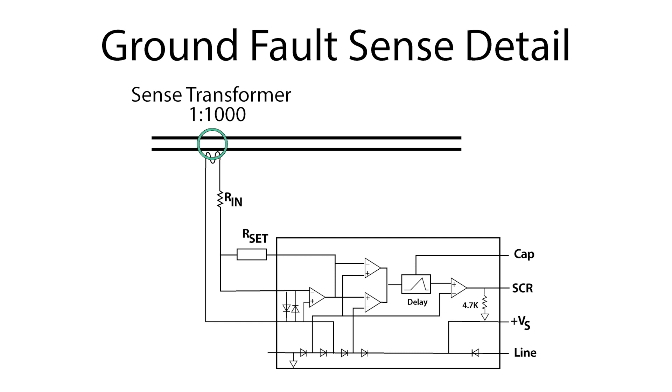The current generated in the toroid windings goes to the precision op-amp which converts it to a voltage. Two comparators on the chip are connected to the sense-amp output. They are configured as a window detector.